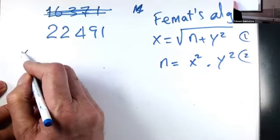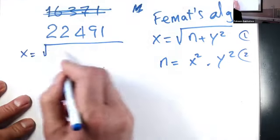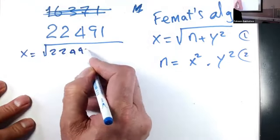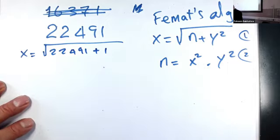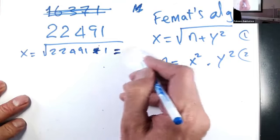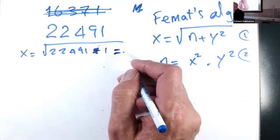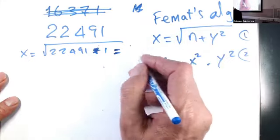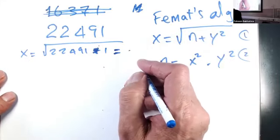So the first one says x equals the square root of 22491 plus one, and we see what that will work out. We find out what's the product here. It doesn't give us a number without fragments, without fraction to multiply.